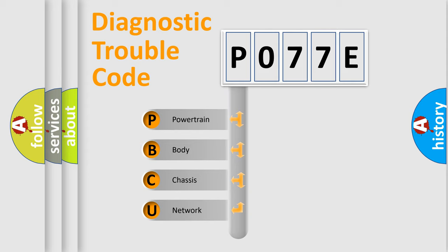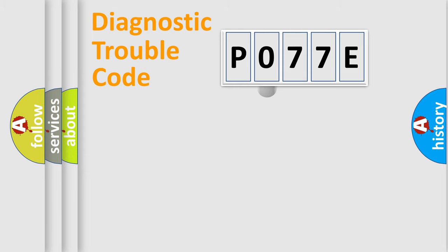We divide the electric system of automobile into four basic units: Powertrain, Body, Chassis, and Network. This distribution is defined in the first character code.